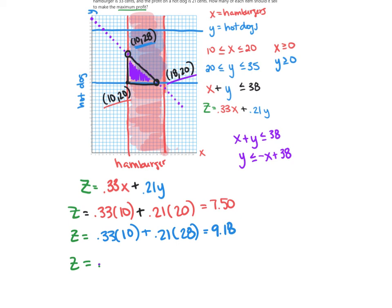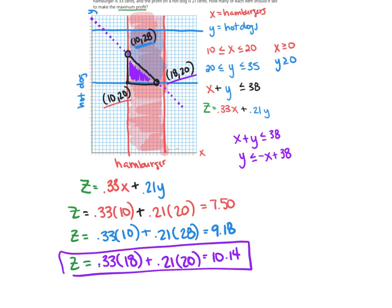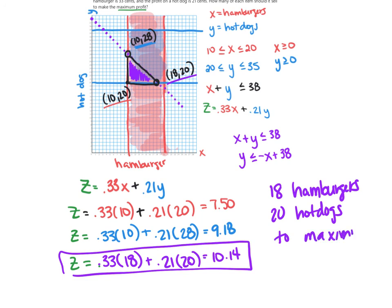For the corner point (18, 20): Z equals 0.33 times 18 plus 0.21 times 20, which gives a value of $10.14. Based on the feasible region, the optimal solution that maximizes profit is at (18, 20) with $10.14. That means we need to sell 18 hamburgers and 20 hot dogs to maximize profit, achieving a maximum profit of $10.14.